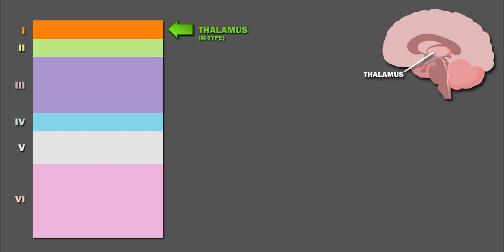Neurons in the first three layers are the principal targets of interhemispheric corticocortical afferent fibers. In other words, they receive communications from cortical neurons in the other hemisphere.